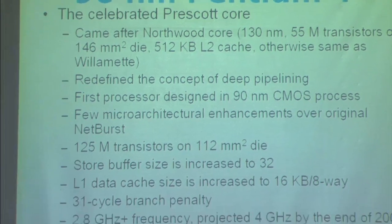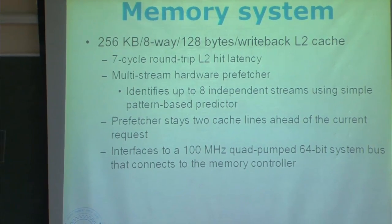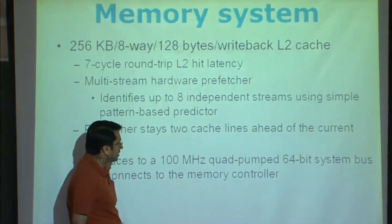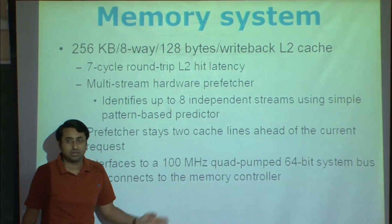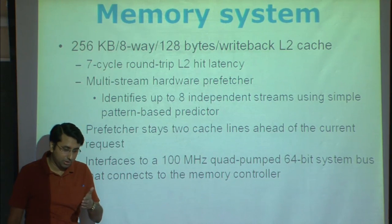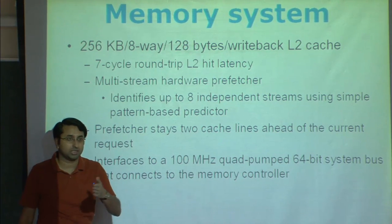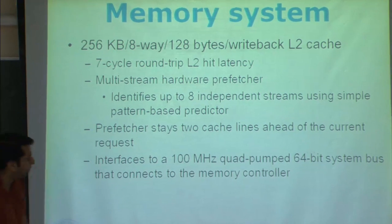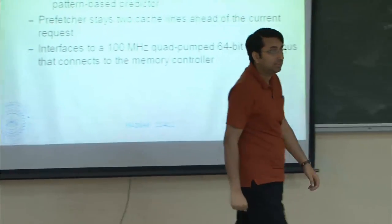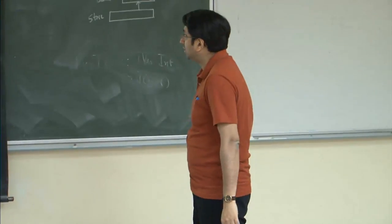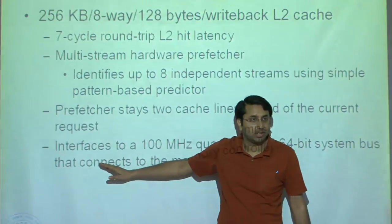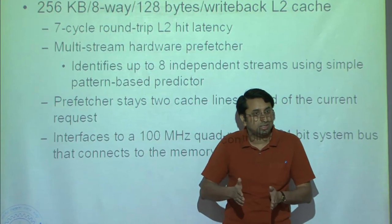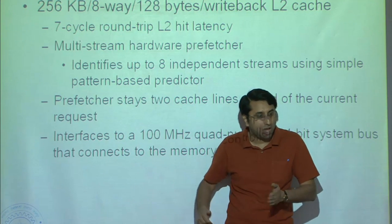The system bus runs at a different clock from the processor. They would be synchronized at the interface using synchronizers, which are essentially buffers — fast requests come from the processor side and a buffer allows a slower interface on the bus side.